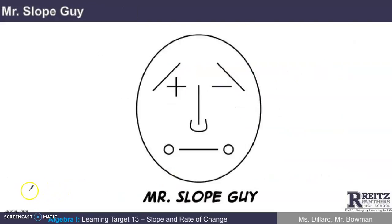Okay, here's a picture of Mr. Slope Guy. This is an image that I found on the internet that succinctly describes the four different types of slope we have. I hope nobody saw this image and said that this looks like Mr. Bowman. Mr. Bowman has a beard. But the four different types of slopes all appear on Mr. Slope Guy's face here.